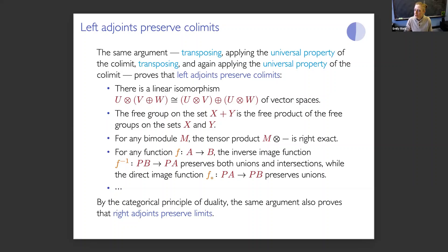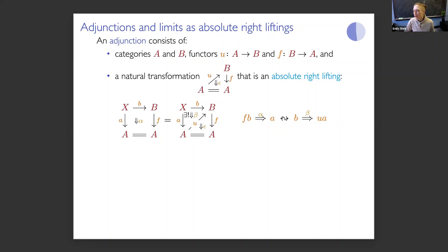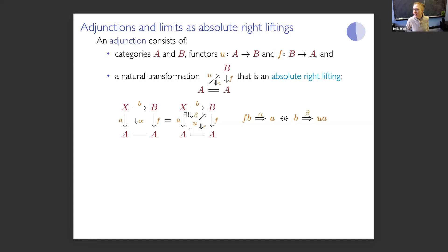Now I want to illustrate what the same theorem — right adjoints preserve limits — looks like in Australian style formal category theory. This will be a bit mystifying if it's the first time you see it, but some of your contemporaries know this language very well. I should define an adjunction — the central concept. The definition I'm going to give is not the most common one, but category theorists in Sydney could explain how it connects to the common ones.